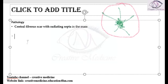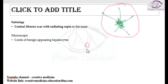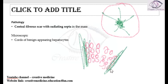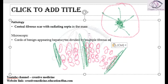On microscopy, cords of benign-looking hepatocytes are seen. These cords are divided by multiple fibrous septa — you will see cords of multiple hepatocytes separated by fibrous septa. These fibrous septa are actually originating from the central scar.